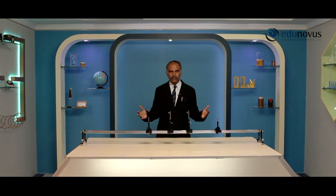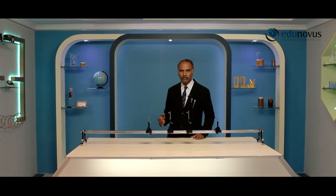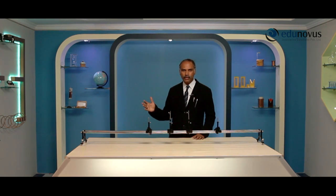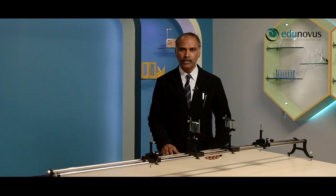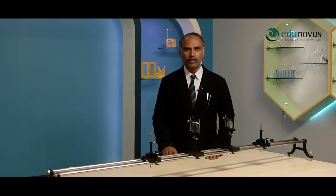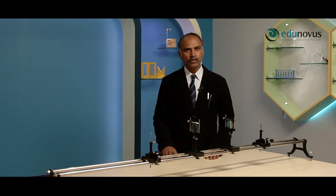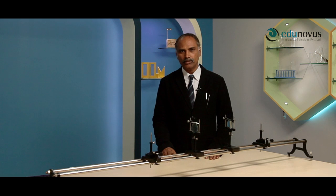Welcome to Adunov's practical session on the focal length of a convex mirror. A convex mirror is also known as a diverging mirror as it diverges the light rays incident on it. In our day-to-day life, we use convex mirrors in vehicles as rearview mirrors to obtain a wider field of view. These are also used as reflectors in street lights to diverge the light over a large area.